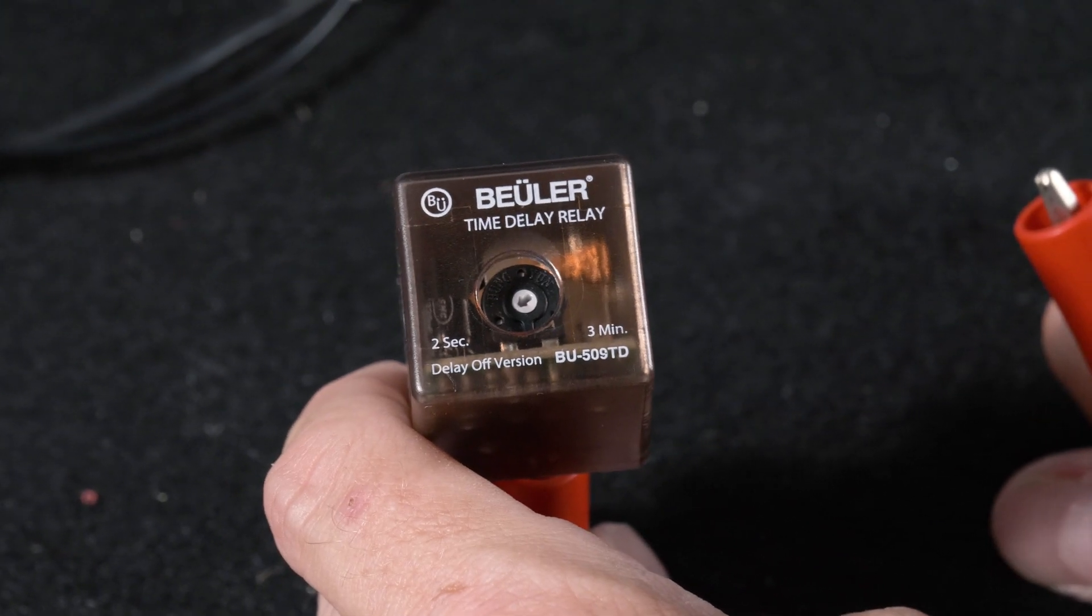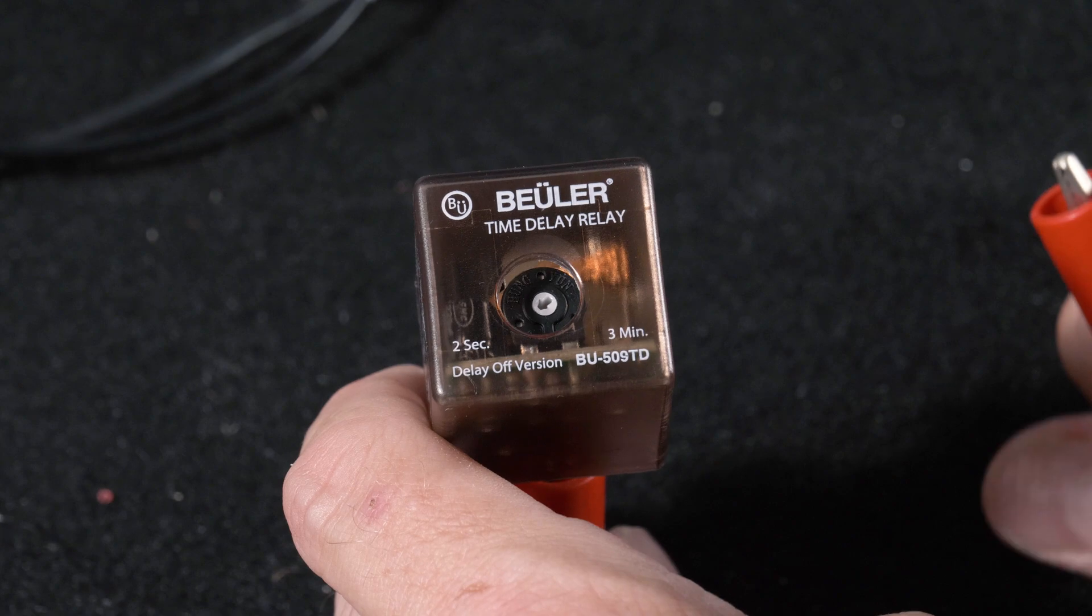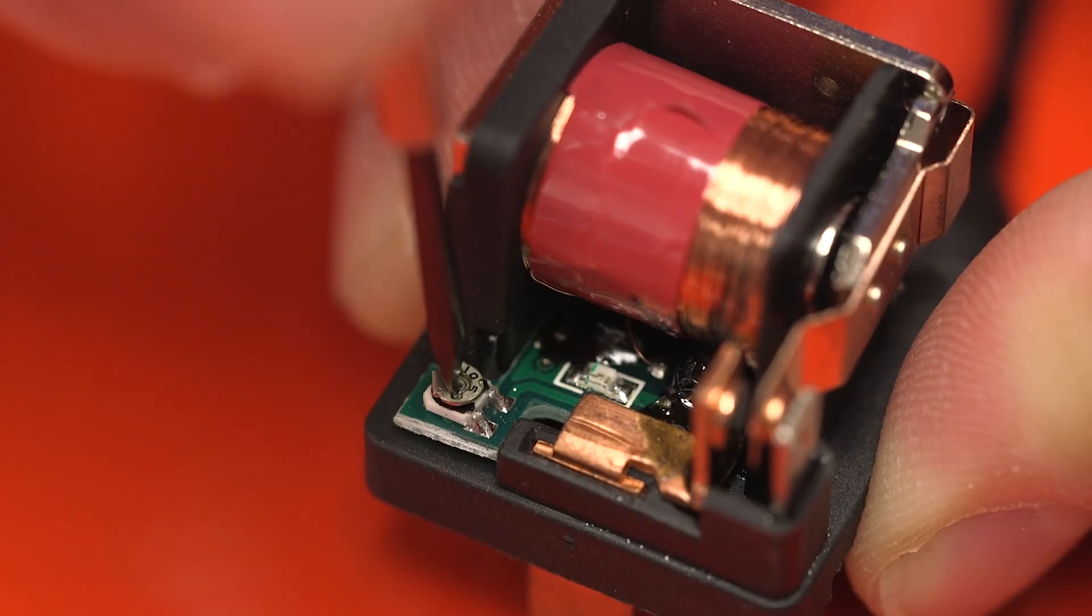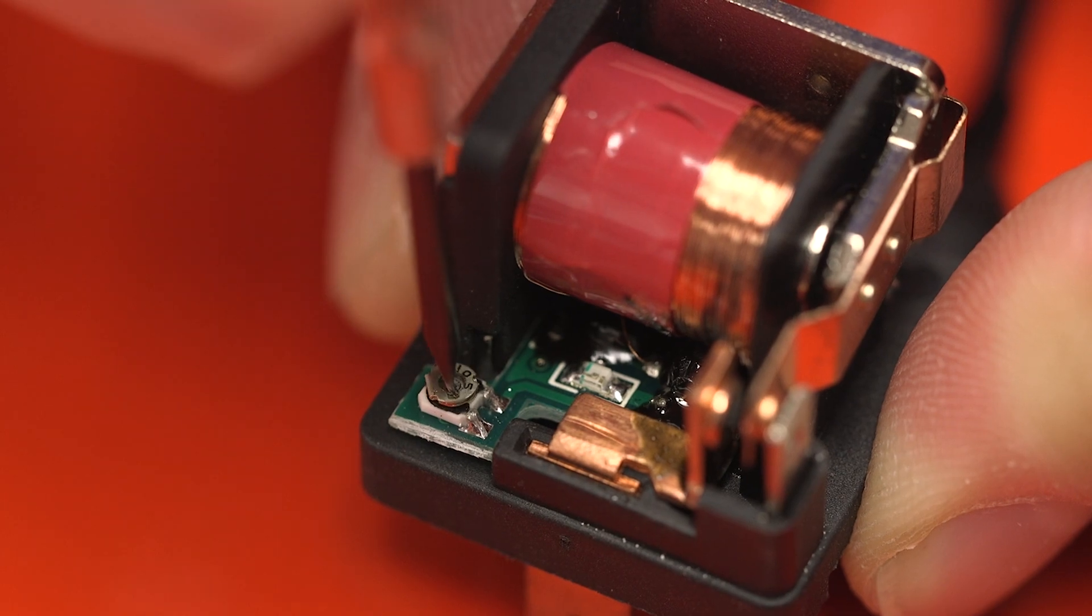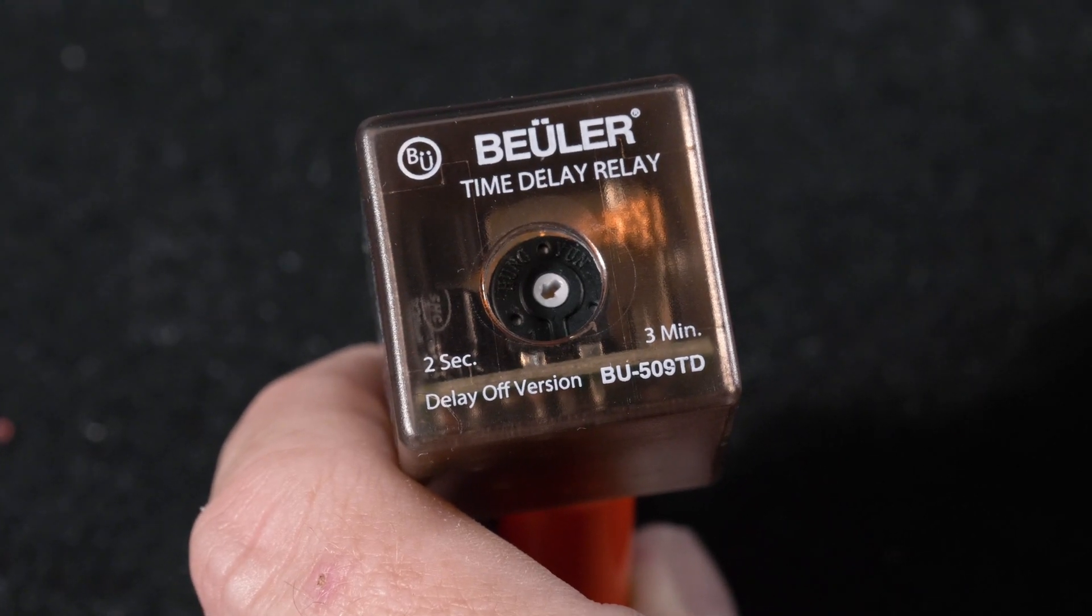One of the small issues, or not really an issue, but one of the things that people had an objection to is the previous unit had a potentiometer that would spin all the way around. This one's been updated with one that has two endpoints.